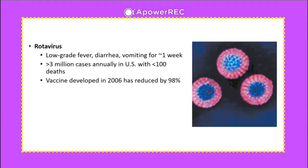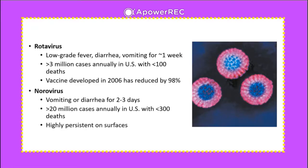Norovirus is similar to rotavirus, which causes fever, diarrhea, and vomiting for about one week. Norovirus also causes vomiting and diarrhea but only for about two to three days. It is very contagious with a very high R-value, causing greater than 20 million cases annually in the US with fewer than 300 deaths. It is highly persistent on surfaces.